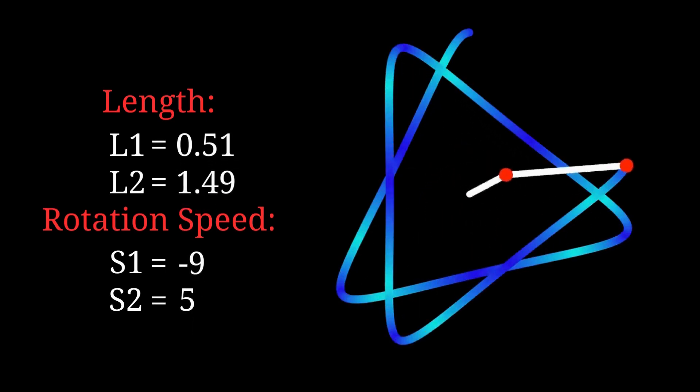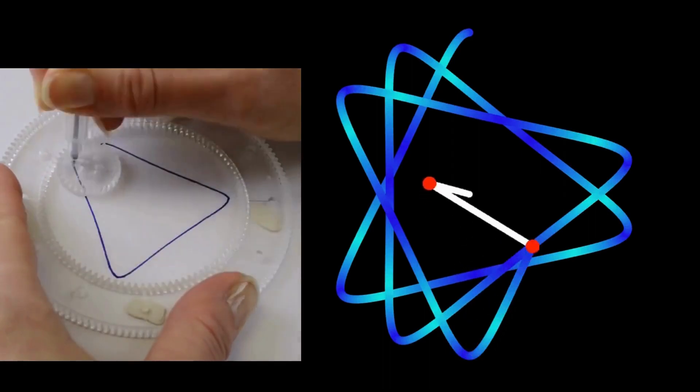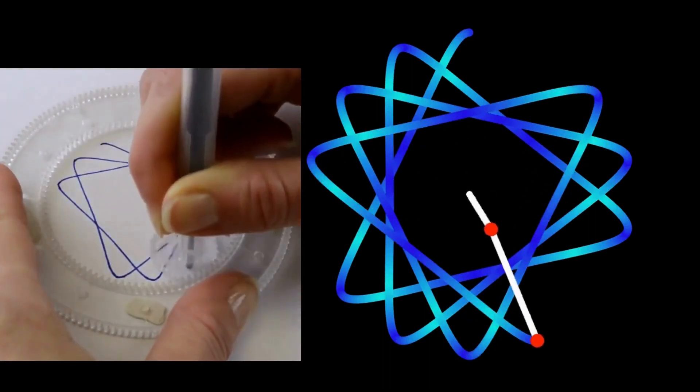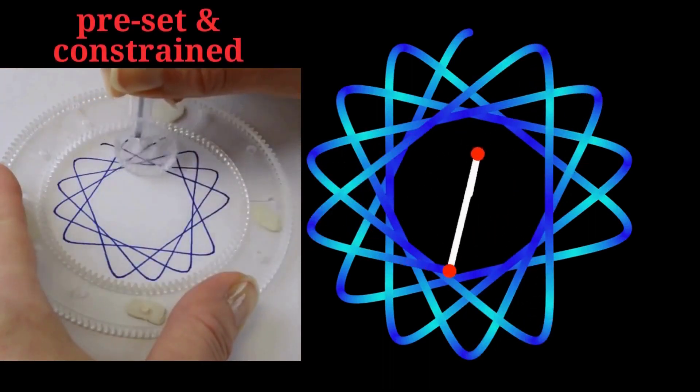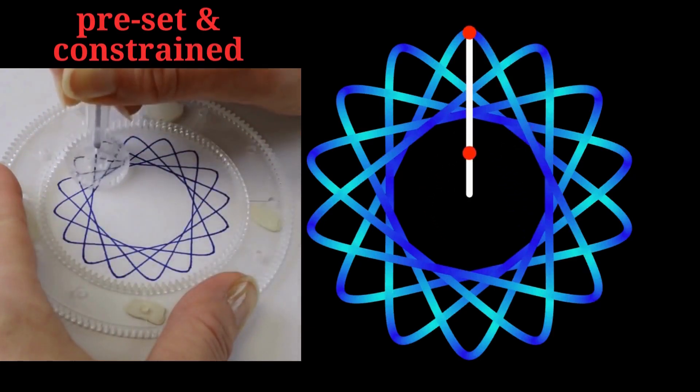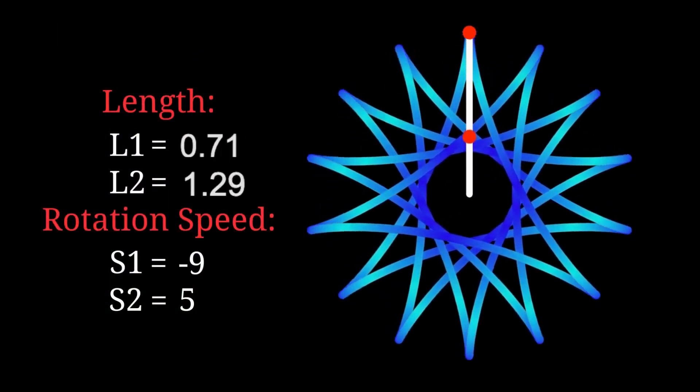Similar curves can be produced using SpiroGraph sets. However, the SpiroGraph gear parameters are preset and constrained. We have more freedom with this digital version.